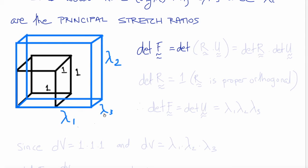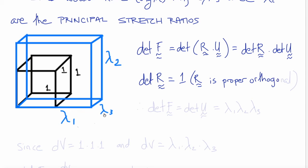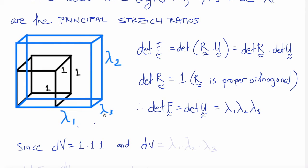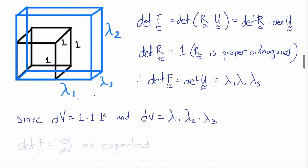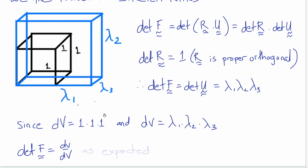The determinant of F from the Polar Decomposition Theorem is also the determinant of R times U, which equals the determinant of R times the determinant of U. Now R is an orthogonal rotation tensor, and so its determinant is 1. Therefore det(F) must equal det(U), which in this case is the product of the principal stretches lambda_1 times lambda_2 times lambda_3 — the deformed volume of our original unit cube, which had undeformed volume 1×1×1. So the ratio of deformed to undeformed volume equals det(F), as expected.